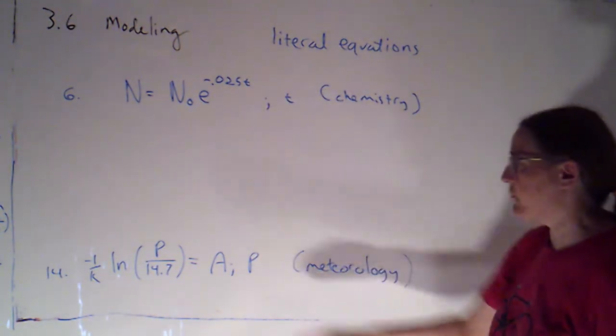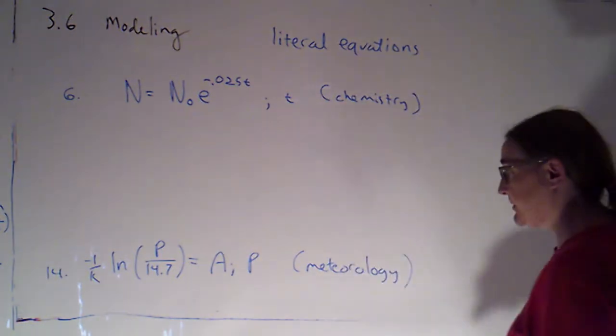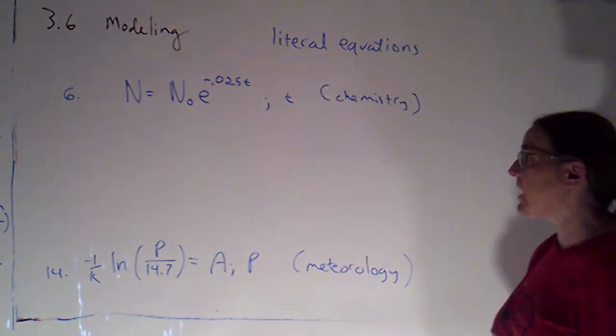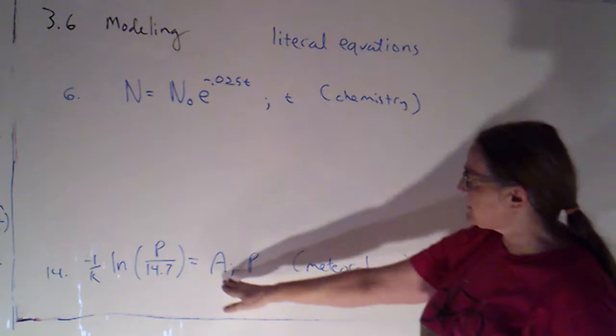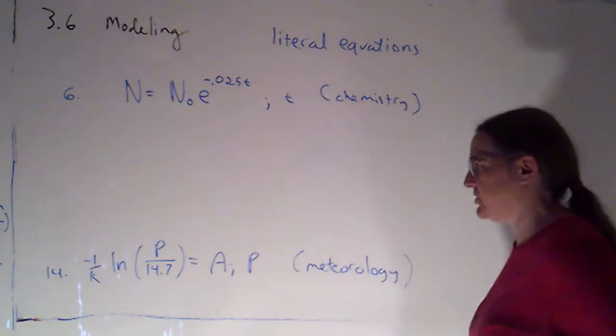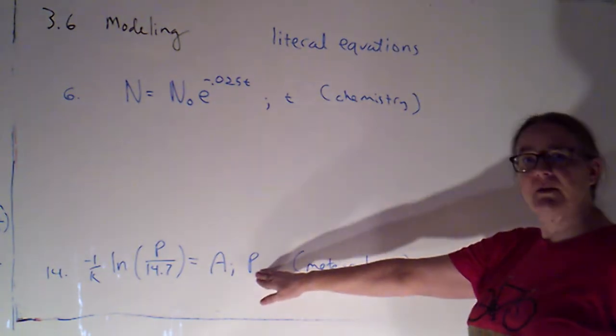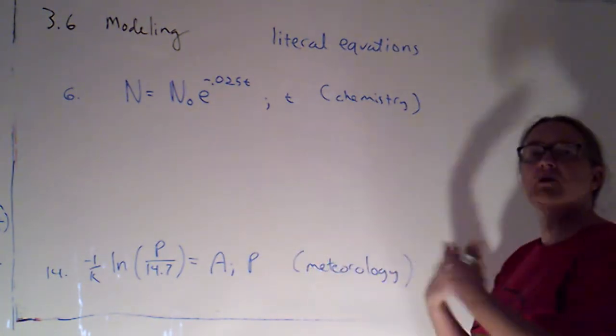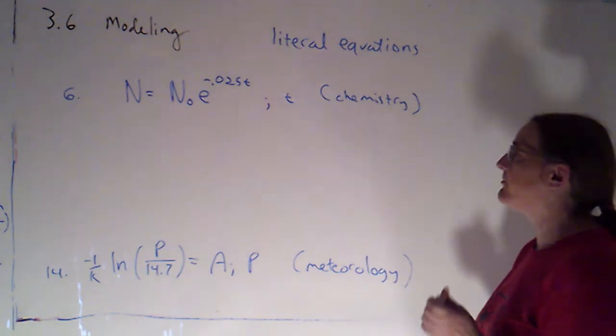And then here with this formula, we don't have a full explanation of it. We're just told it's used in meteorology. But they're saying right now it's solved for a, whatever that is. You might find yourself, if you were a meteorologist, finding it more hopeful to be able to solve for p. So can we just rearrange the formula to solve for that?